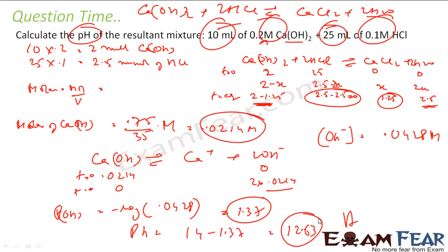So in this case what happened was: Ca(OH)₂ and HCl reacted; HCl was totally consumed and we were left only with Ca(OH)₂, but with fewer moles than we started with since some was used to react with HCl. With the remaining moles of Ca(OH)₂, we found the number of OH⁻ ions produced, and from that we calculated the pH.